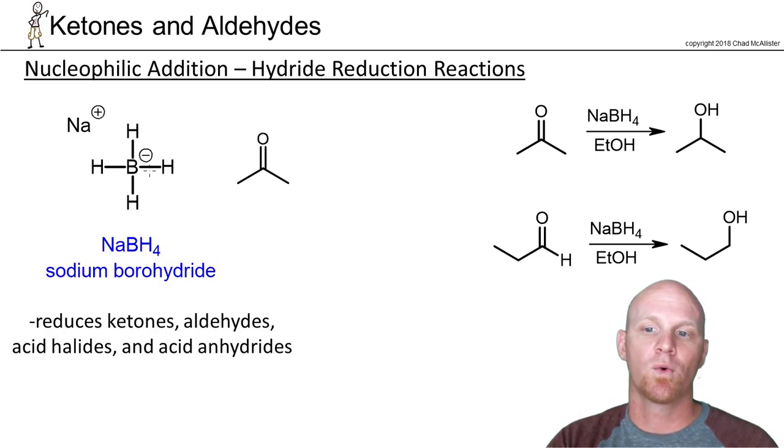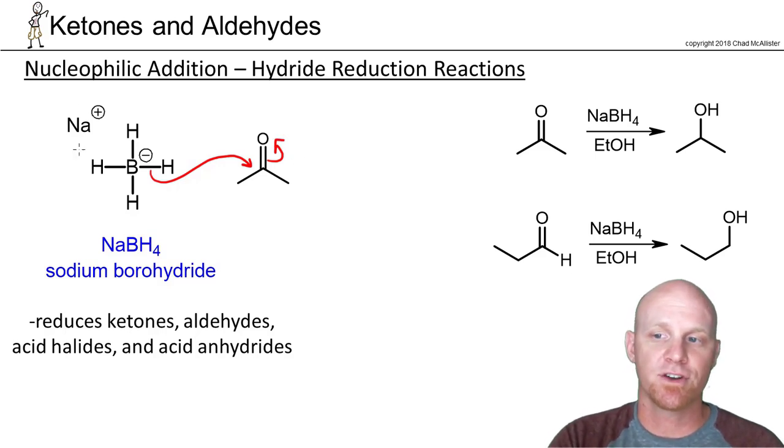With sodium borohydride, one of the H's breaks off and attacks the carbonyl—just another nucleophilic addition reaction. From here we form an alkoxide; we've added that hydrogen that we don't technically have to draw in. We've got the corresponding alkoxide ion, and now we just need to protonate it.